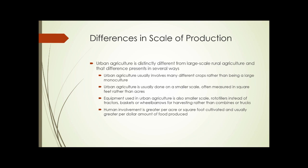Let's talk about some differences in the scale of production. Urban agriculture is distinctly different from large-scale rural agriculture, and that difference presents in several ways. First, urban agriculture usually involves many different crops, rather than being a large monoculture. On a typical large corporate farm in the developed world, you may find one or two crops being grown. In the Midwest, it's common for farms with, say, 500 acres to grow 250 acres of corn and 250 acres of soybean.